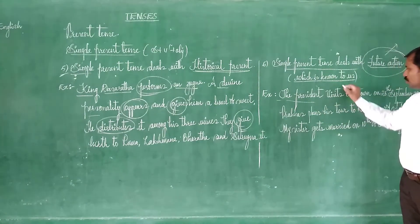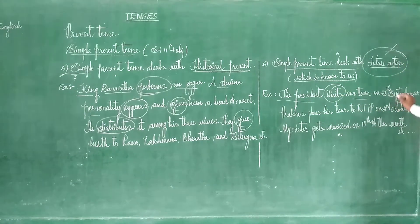The president visits our town on 26th September 2020. So we have known very clearly on which date he is visiting, so I have given date also. That means any information or any incident that is going to happen in the future is known to us now, so that we can write in the simple present tense undoubtedly.